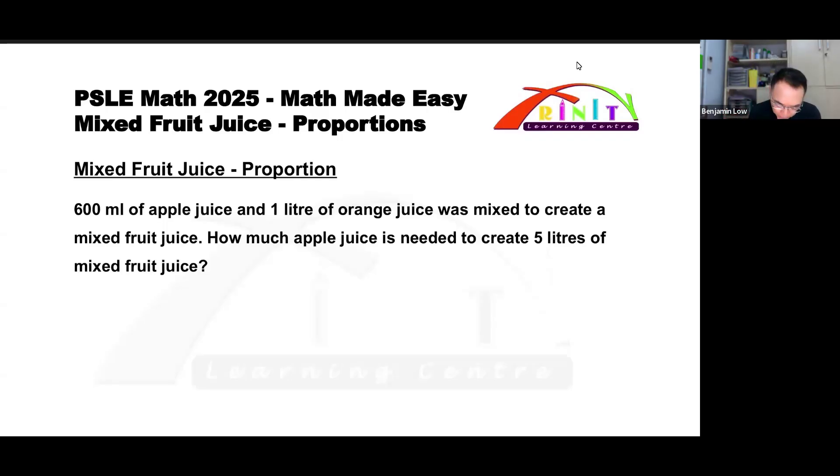Let's begin. It says here that there was 600 ml of apple juice and 1 liter of orange juice that was mixed to form a mixed fruit juice. They put them together and you get what we call a mixed fruit juice. The question is: how much apple juice is needed to create 5 liters of mixed fruit juice?